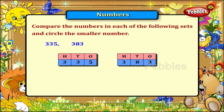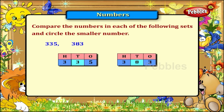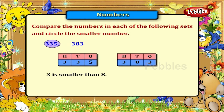335 and 383. The numbers in the hundreds place are the same, so now compare the numbers in the tens place. 3 is smaller than 8, so 335 is the smaller number.